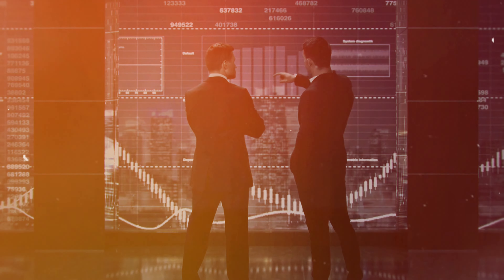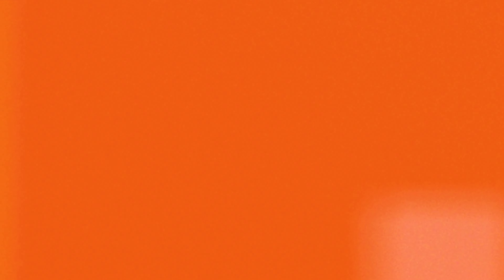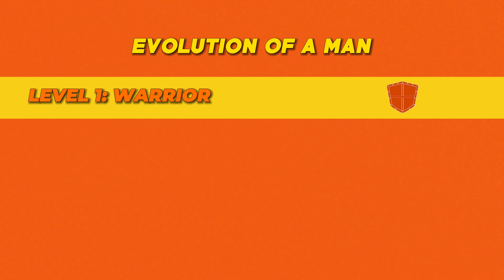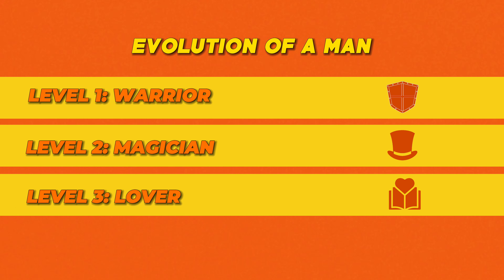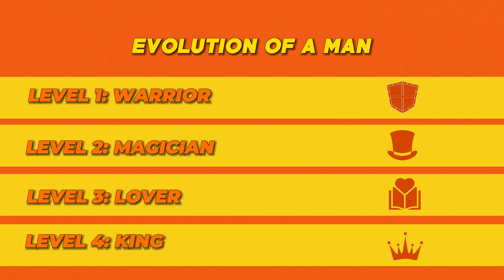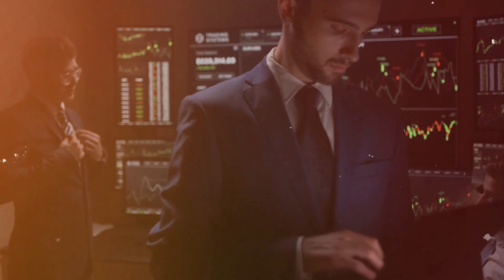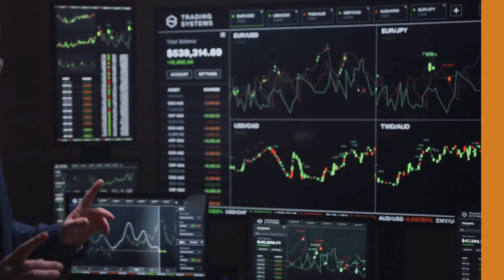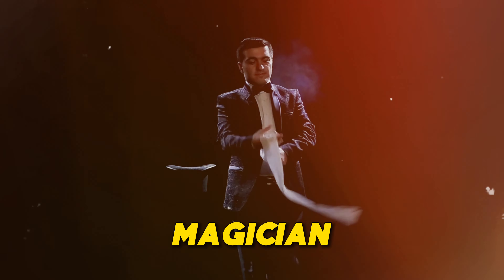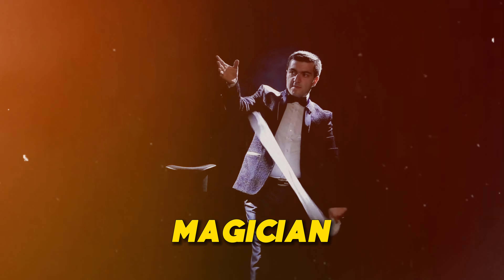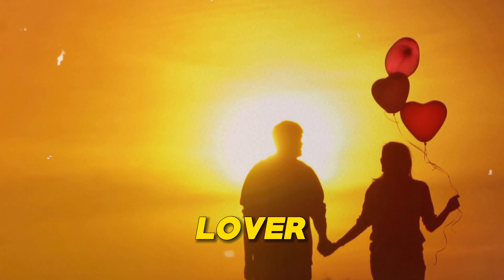Here's another example: say you're in men's work and you want to create a learning path called 'The Evolution of a Man.' You could create four levels — Warrior, Magician, Lover, and King. Once they go through all the content and complete all the action items for Warrior, they level up to Magician, then Lover, and ultimately reach Level 4: King. That's how you build an identity-driven learning journey.